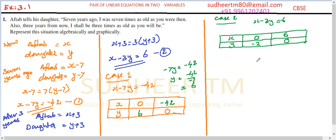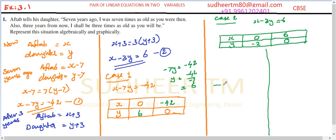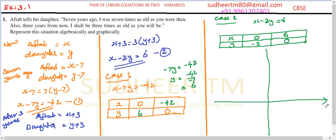Now we plot both cases on the same graph. Let's draw a Cartesian coordinate system with a Y axis and an X axis. The X values range from minus 42 to plus 40, so we mark minus 10, minus 20, minus 30, minus 40 and plus 10, 20, 30, 40. The Y values range from minus 6 to plus 8, marking 2, 4, 6, 8 and minus 2, minus 4, minus 6.